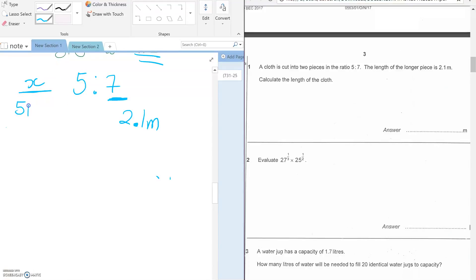So because we have a cloth of length X that is divided into 12 parts—if you add 5 and 7 together you get 12—which means that the cloth has 12 parts. Five of those parts are in this side and then seven of those parts are in this side.